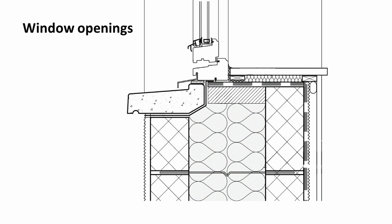These details are taken from the Scottish Accredited Details page, where they give you a number of different details on different types of construction — there's full fill, partial fill, and timber frame. We're going to look at a full fill construction, and this is the kind of window detail that we're going to build up.